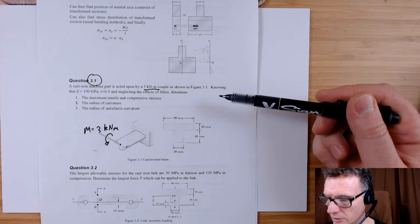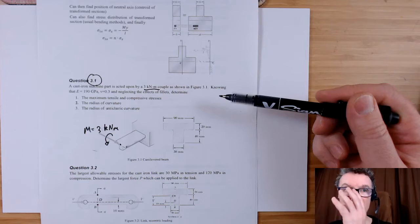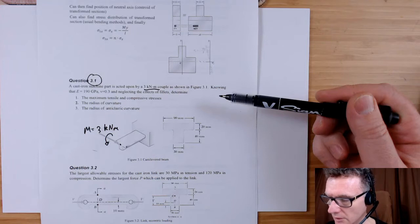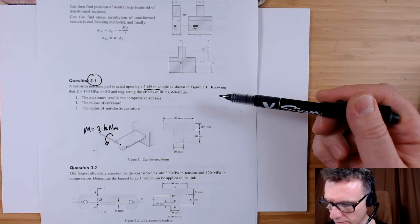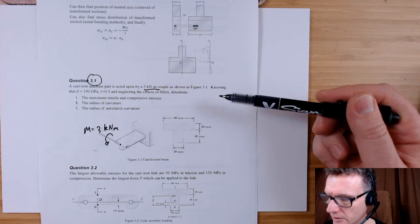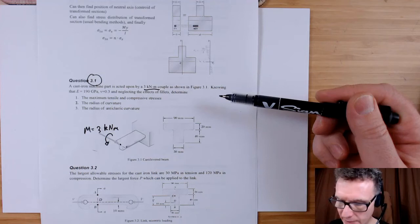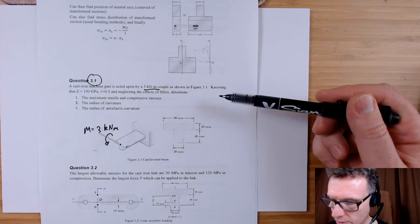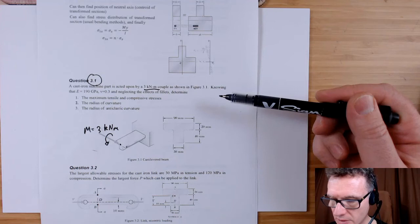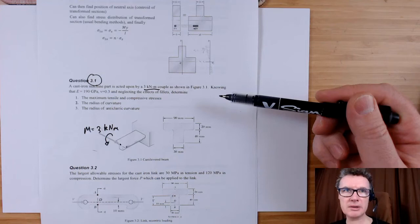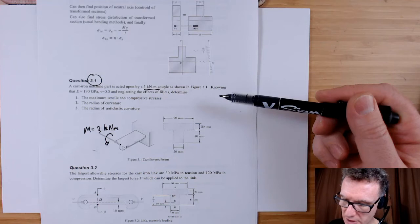Area one, 1,200, multiplied by its centroid, which will be 20. Area two, 1,800, multiplied by its centroid, so we've got 40 millimeters plus 10, so that'd be 50. So the y-bar is going to be 1,200 times 20 plus 1,800 times 50 divided by 1,200 plus 1,800, and we get a nice number: 38 millimeters, and that's obviously coming from the base.